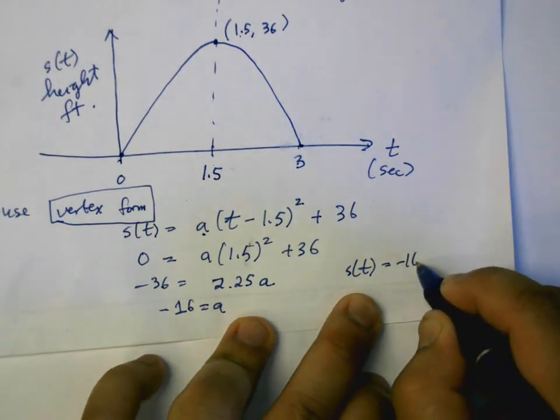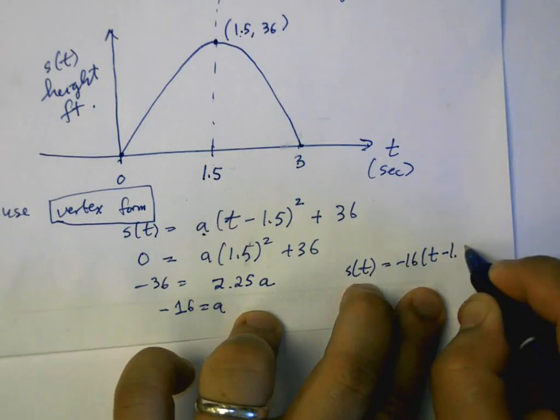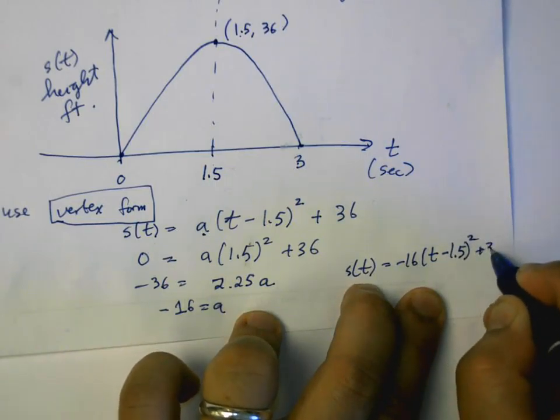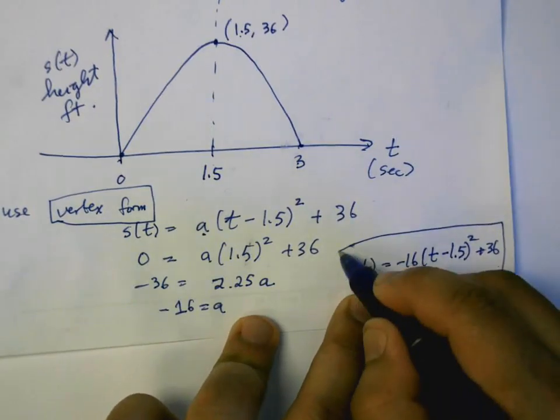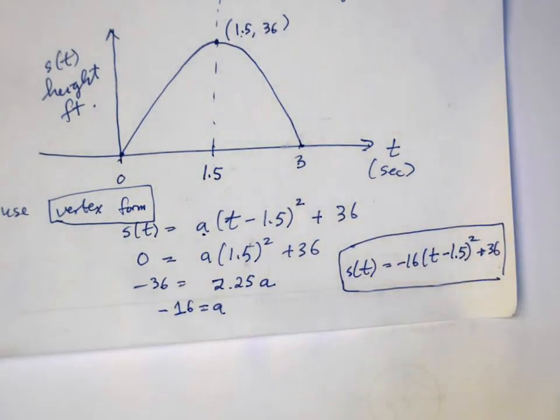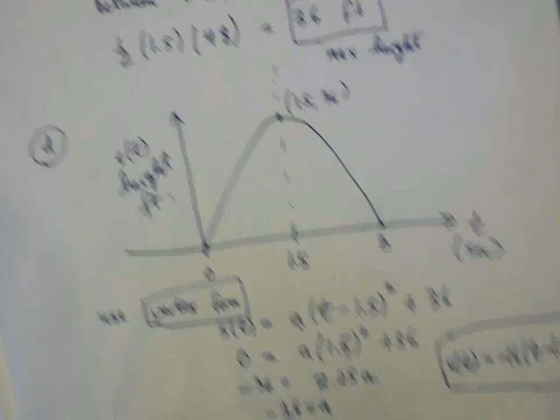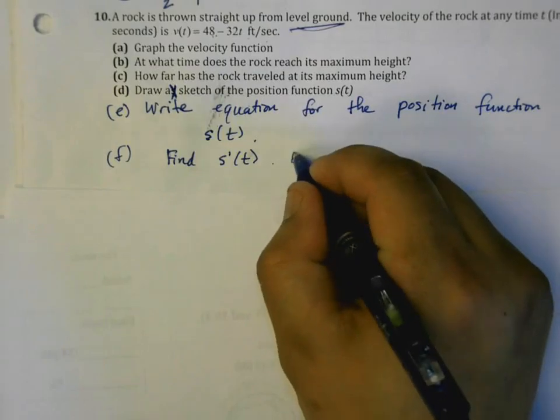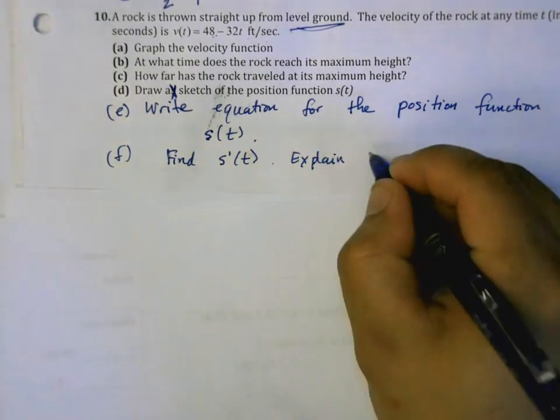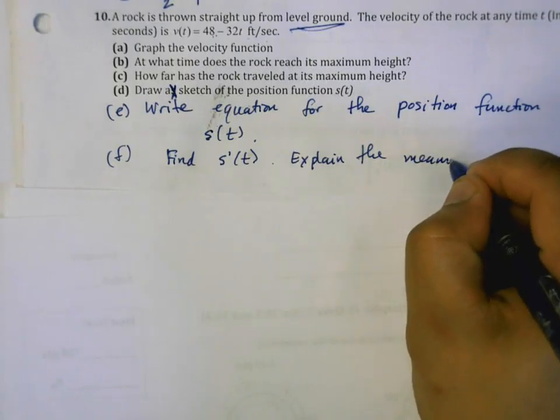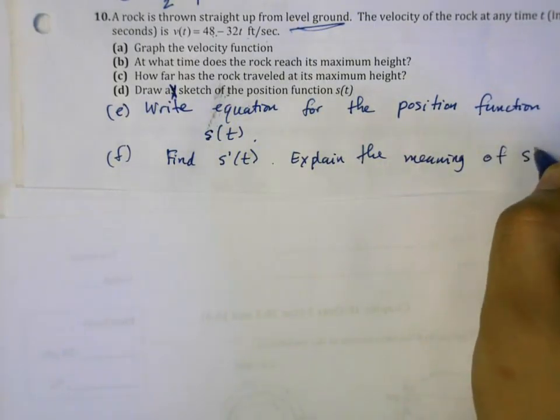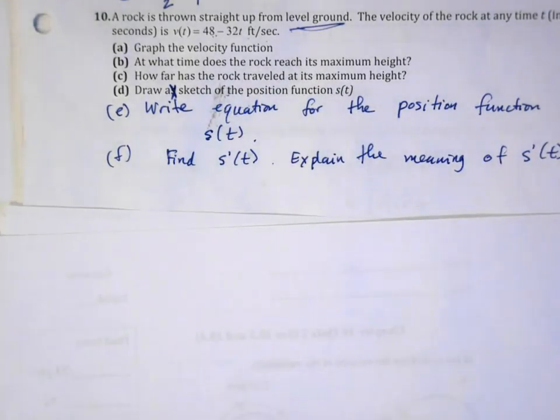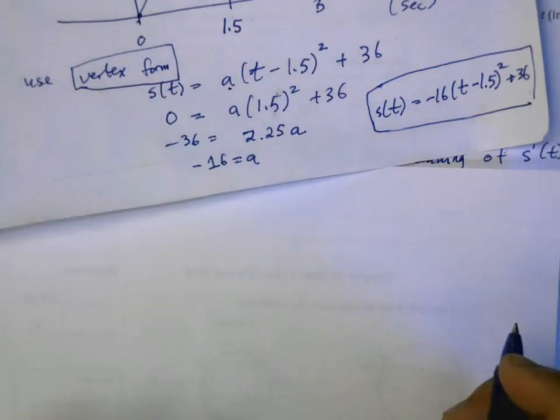From 0 to 1.5 seconds how far has it traveled? Well we have the velocity function, so in order for us to find the distance traveled we just evaluate the area underneath the curve. Look back at the first page of your notes where we talked about going from velocity to finding distance. So this is one half, the base of this thing is 1.5 times 48, and this should give us 36, and the units here are feet.